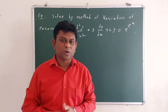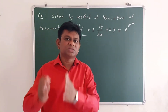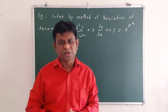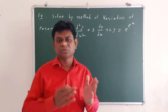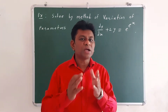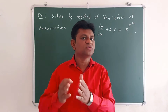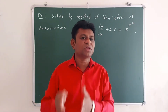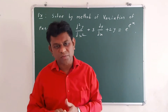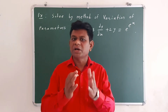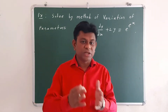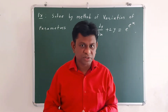We will solve this problem in three steps. Step one: find the complementary function of the given differential equation. Step two: find W, where W means the Wronskian, defined as y1·y2' minus y2·y1'. Step three: find the particular integral by using the variation of parameter method.